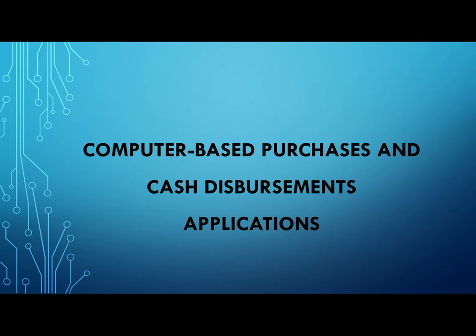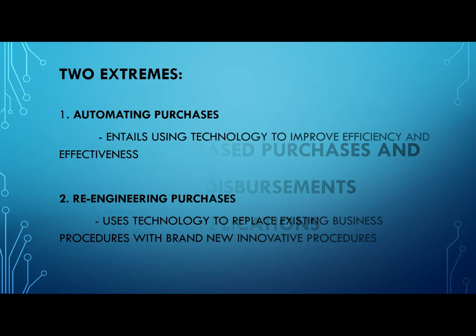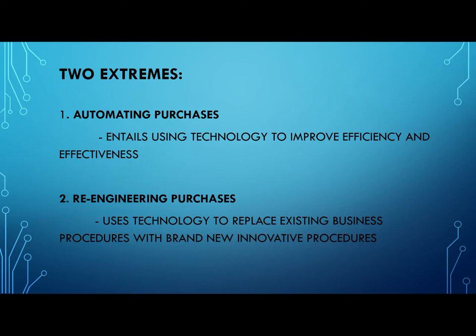Computer-based purchases and cash disbursement applications are also called CBUS — software systems typically found within manufacturing businesses to reduce error, time spent on purchases, and to increase profitability. Software interventions automate this time-consuming process, allowing for a central data repository, streamlining the process, eliminating human error, and linking to real-time supply chain information. CBUS can be regarded as a continuum with two extremes: automation at the low end and re-engineering at the high end. Automation uses technology to improve efficiency and effectiveness, while re-engineering uses technology to replace existing business procedures with brand-new innovative procedures.